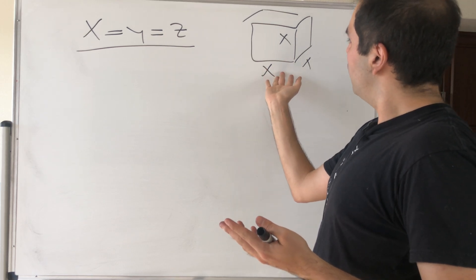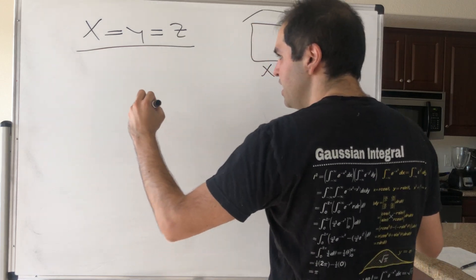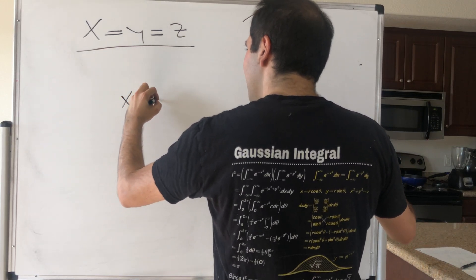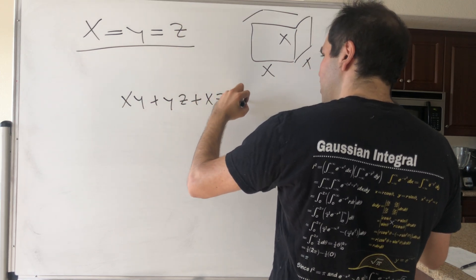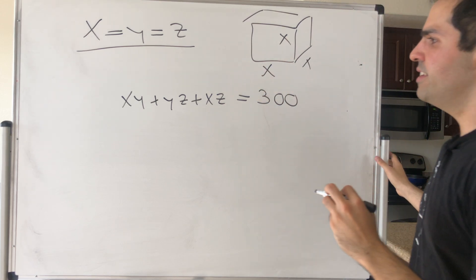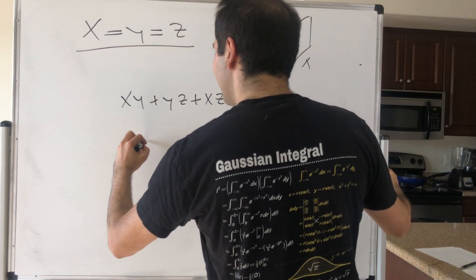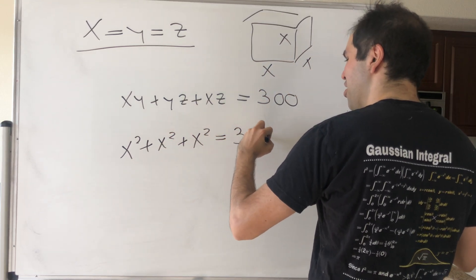Last but not least, how do you find x? Well, simply using your constraint. Because remember, G was xy plus yz plus xz minus 300 equals 0, so that equals 300. But now x equals y equals z, so we get x squared plus x squared plus x squared equals 300.